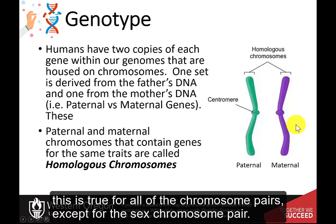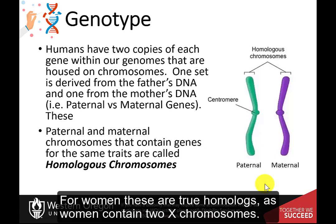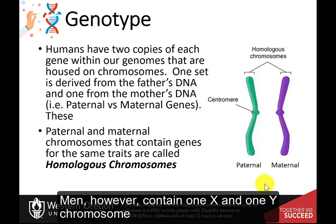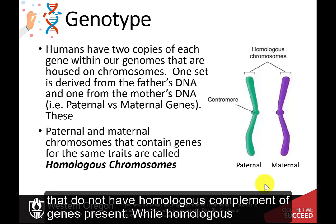In humans, this is true for all of the chromosome pairs, except for the sex chromosome pair. For women, these are true homologues, as women contain two X chromosomes. Men, however, contain one X and one Y chromosome that do not have a homologous complement of genes present.